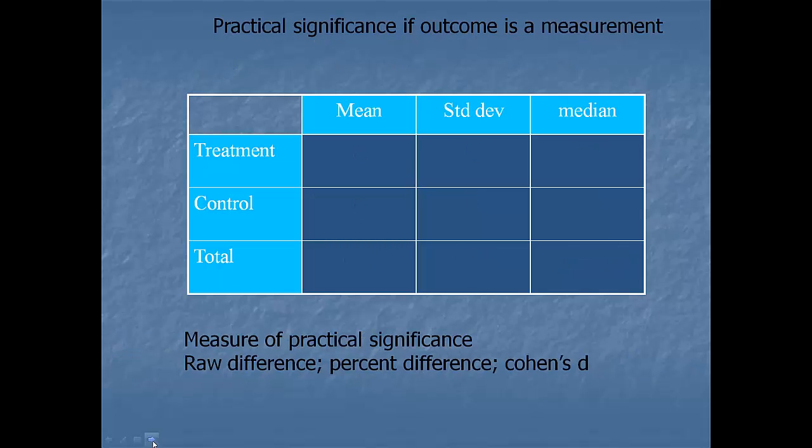If outcome is measurement, we compare means. Mean of treatment, mean of control. Or actually, more accurately. And it should be x-bar for treatment, x-bar for control group.